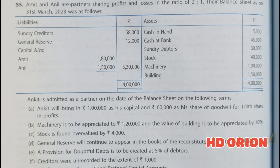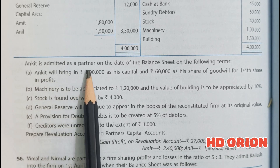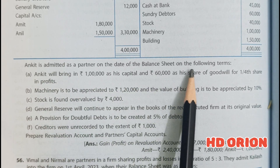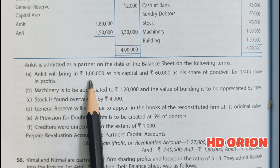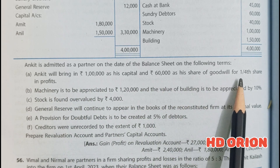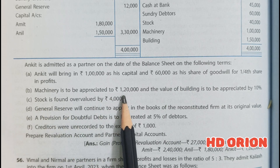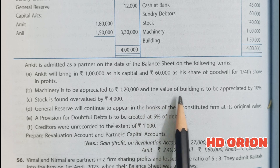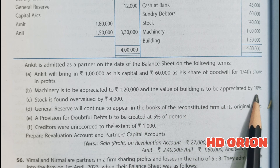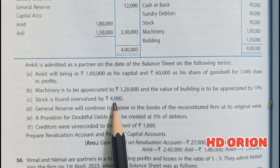A new partner Ankit is admitted on the date of the balance sheet on the following terms: Ankit will bring rupees 1,00,000 as his capital and rupees 60,000 as his share of goodwill for a one-fourth share in profits. Machinery is to be appreciated to rupees 1,20,000, and the value of building is to be appreciated by 10%. Stock is found overvalued by rupees 4,000.